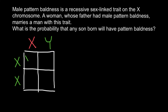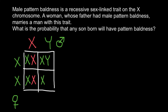In the Punnett square, the first cell has one normal X chromosome from the mother's side, one defective X chromosome from the father's side, one normal X and normal Y from the father's side. Here, 50% of the progeny are males and 50% are females, and all the female progeny in this family are carriers.